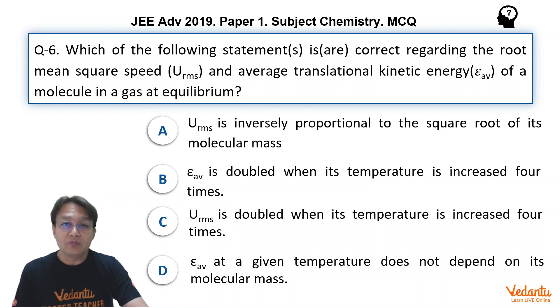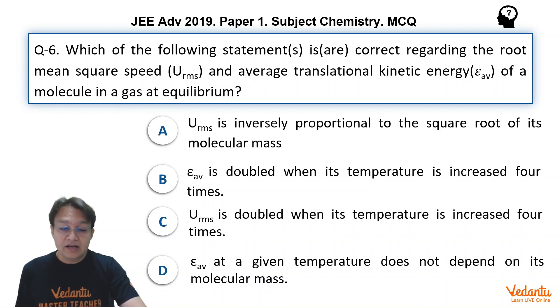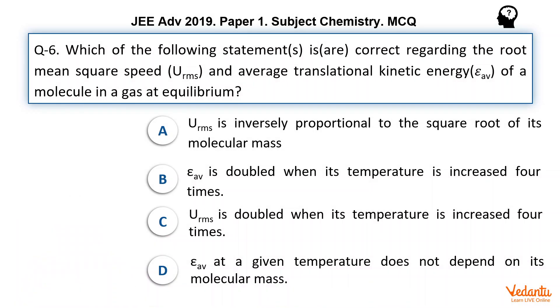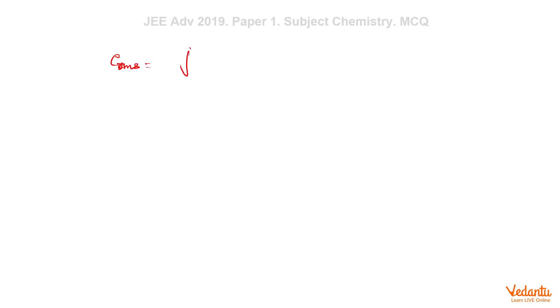This problem is a straight formula-based problem. To answer this question, you need to know these facts very fluently. We know that CRMS equals root of 3RT upon M, and we also know that the average kinetic energy equals 3/2 RT, and we also know that half times M times CRMS squared represents the kinetic energy.